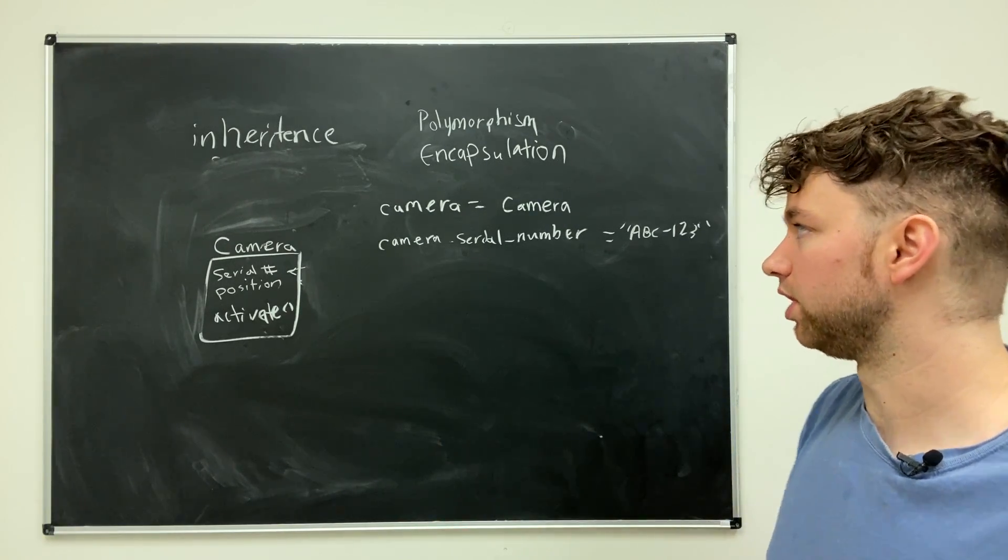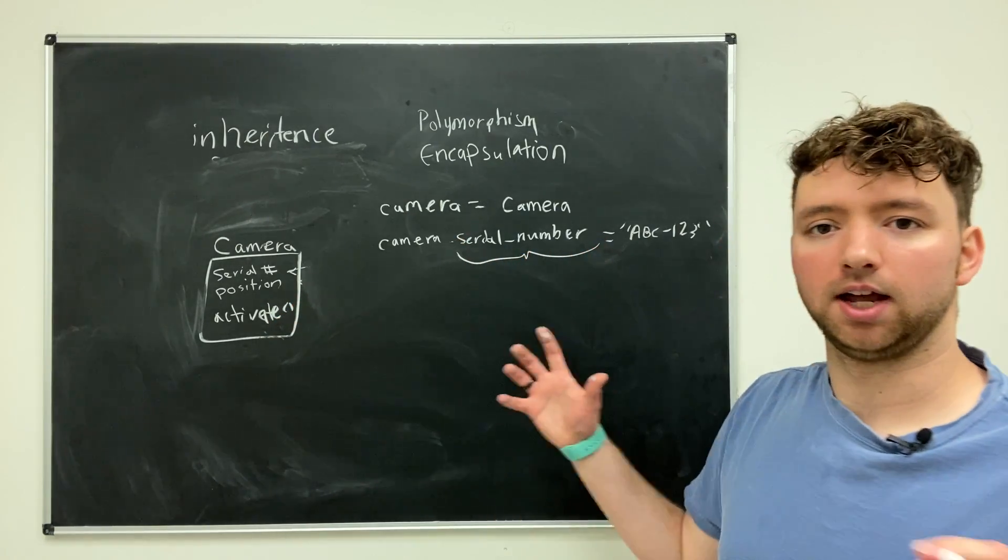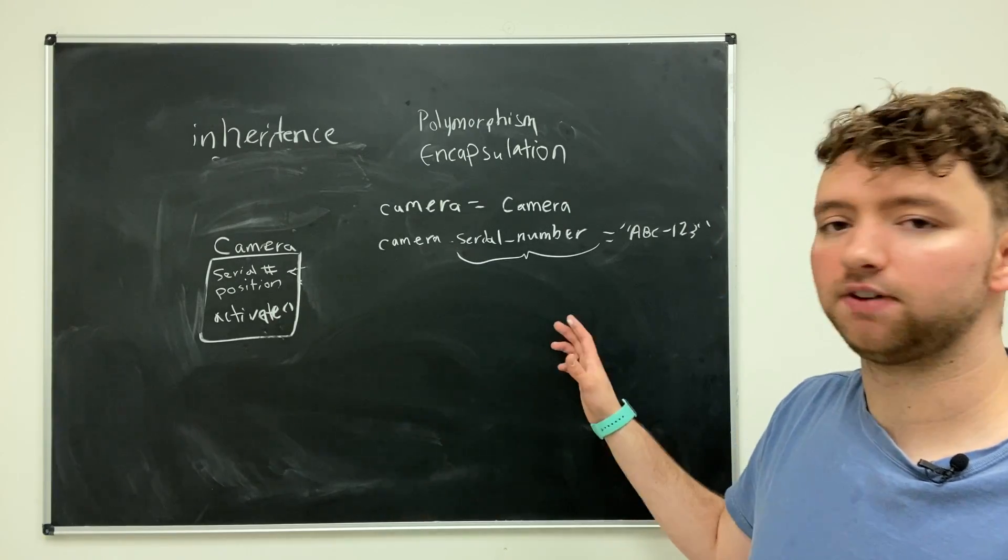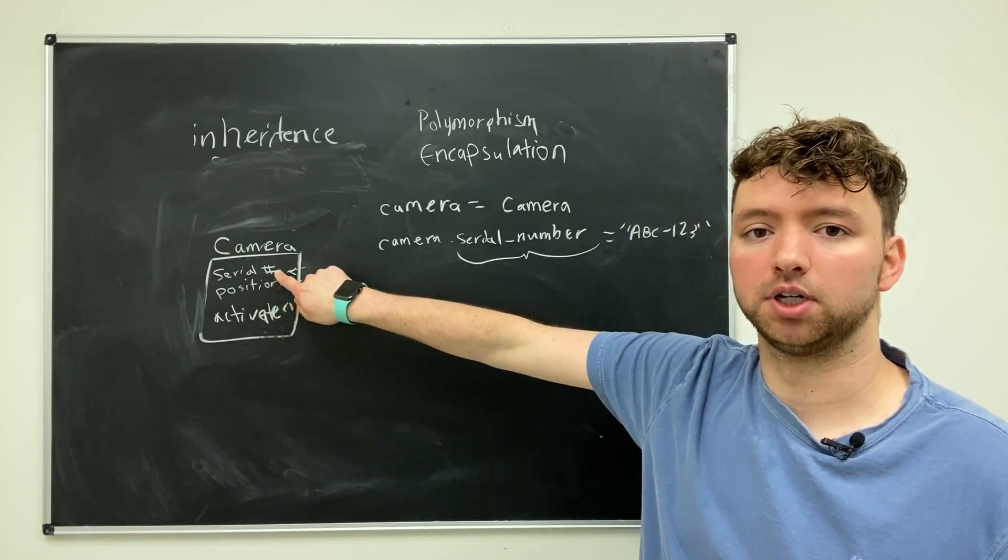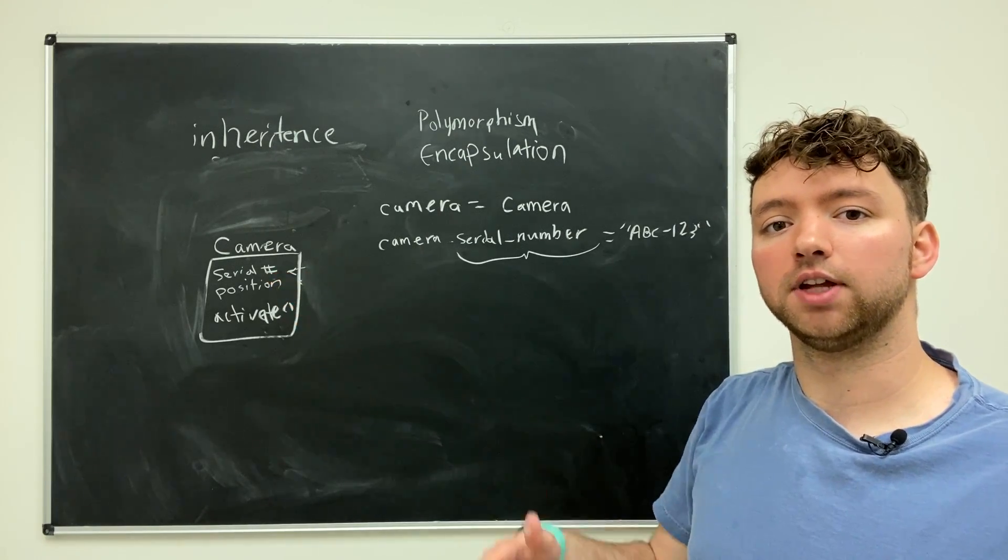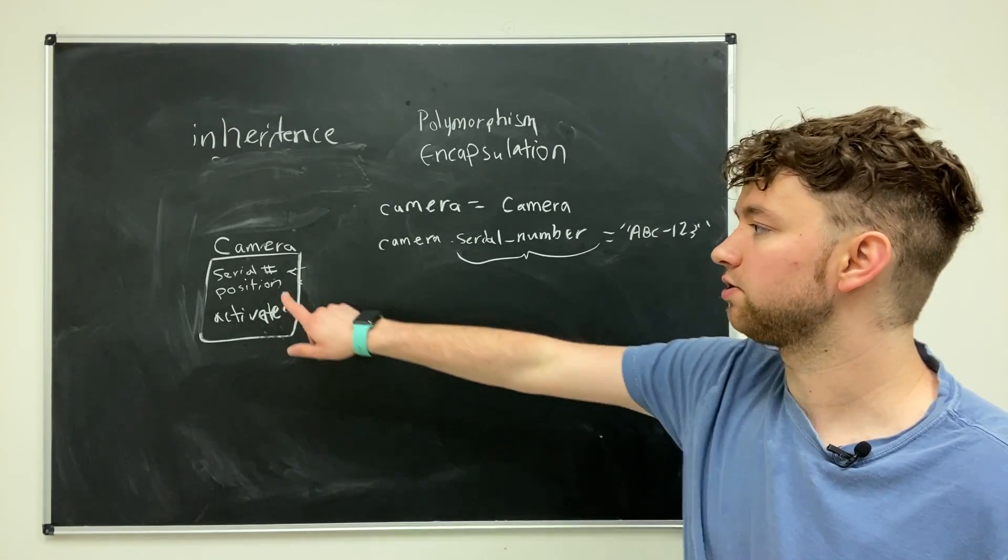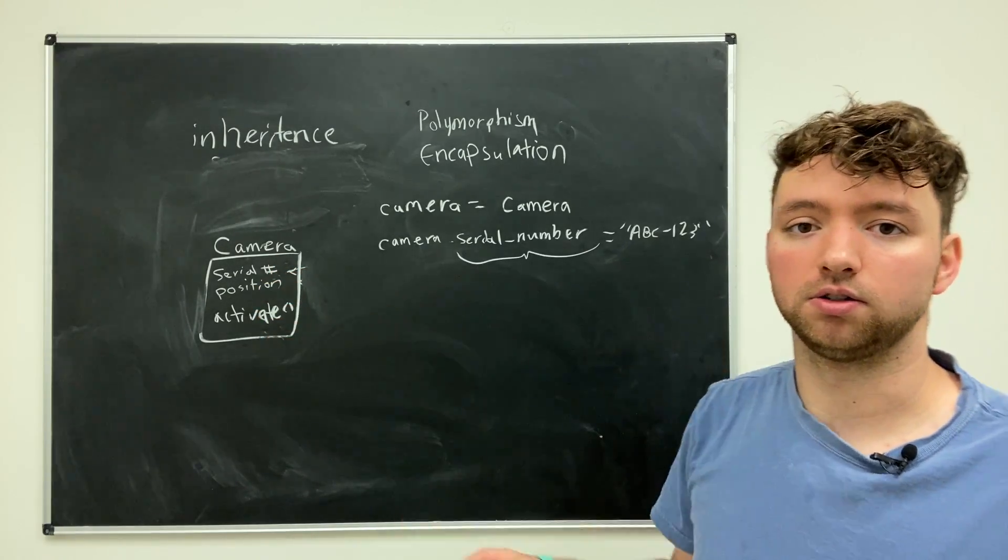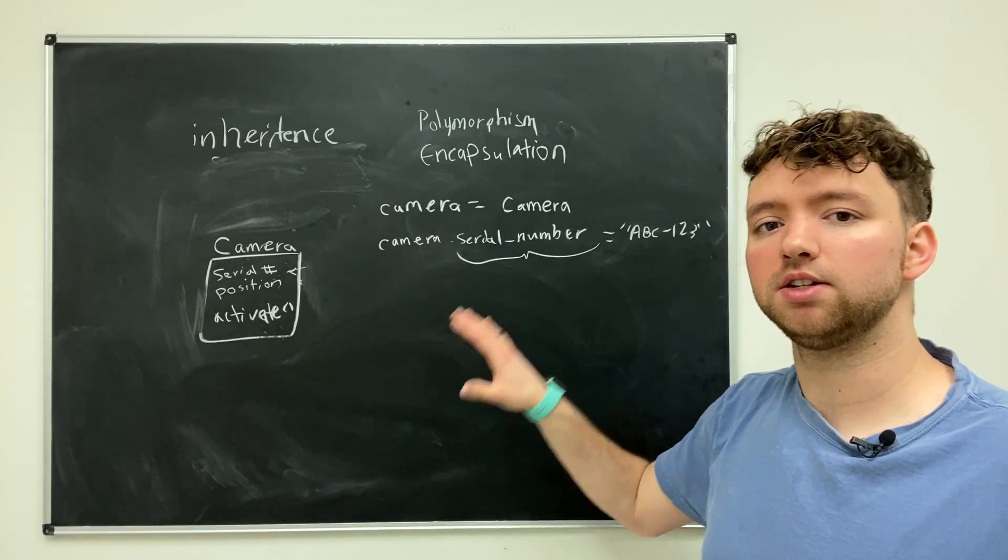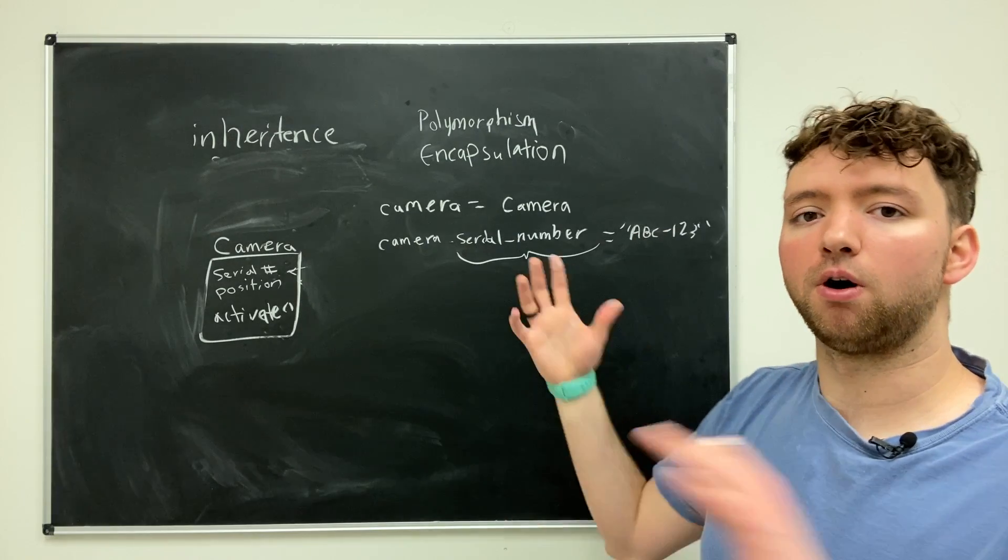But here's the cool thing is when you first define your class, you can define this as just a normal attribute. It's just a variable for this object. It's defined right here, serial number inside of the class. And then if later on you need to actually do some extra processing, you can change this to a property inside of the camera class. And all of the calling code stays exactly the same. So it's really easy just to start as a variable and then update it later without having to refactor all of your code.